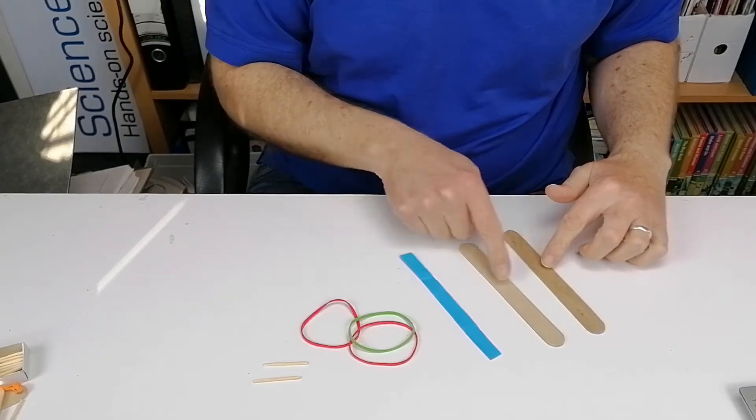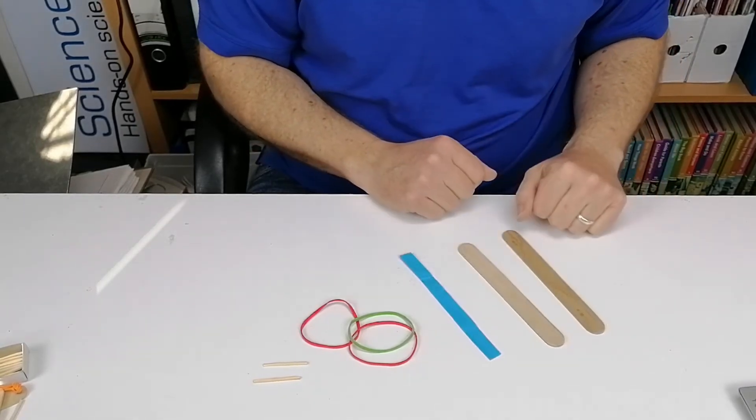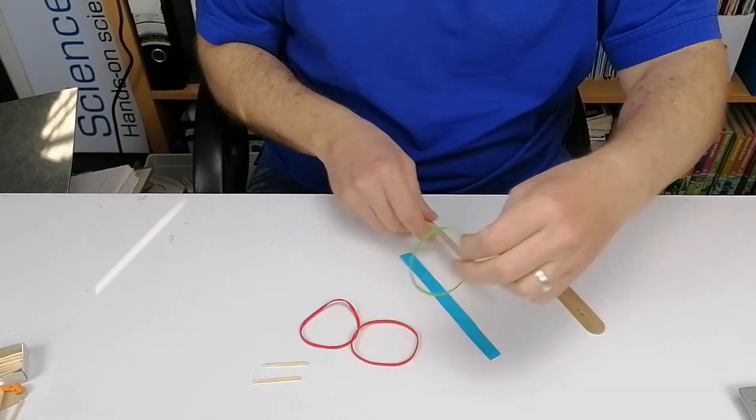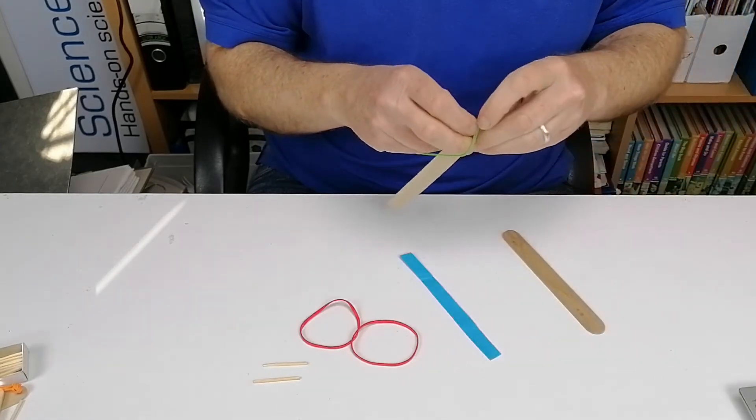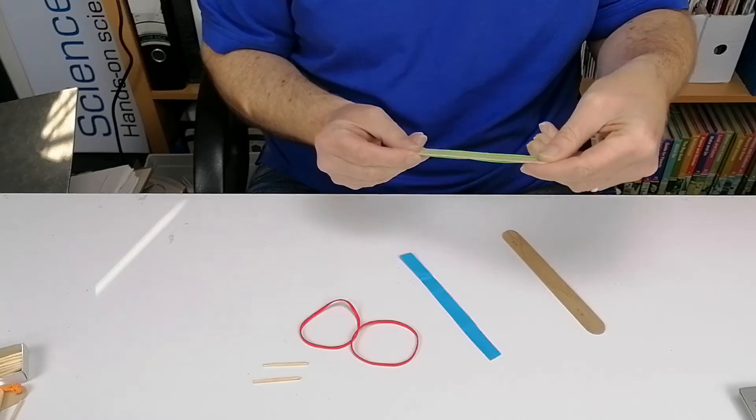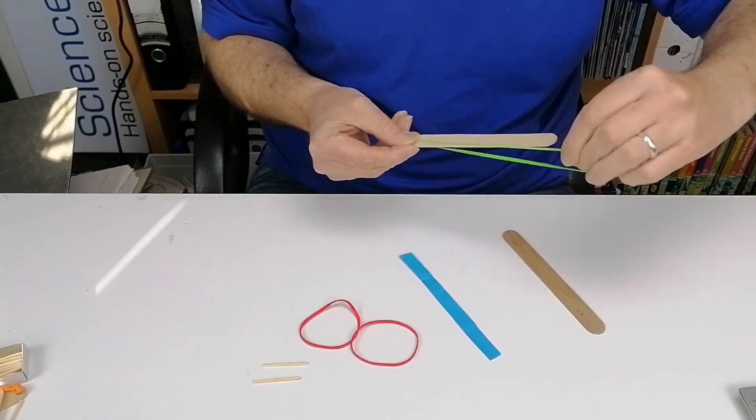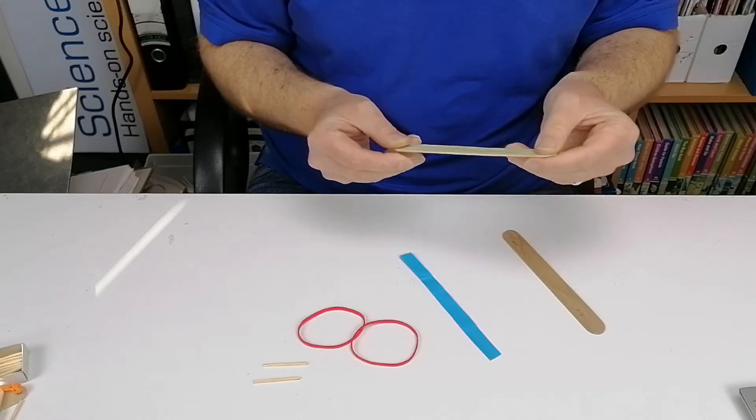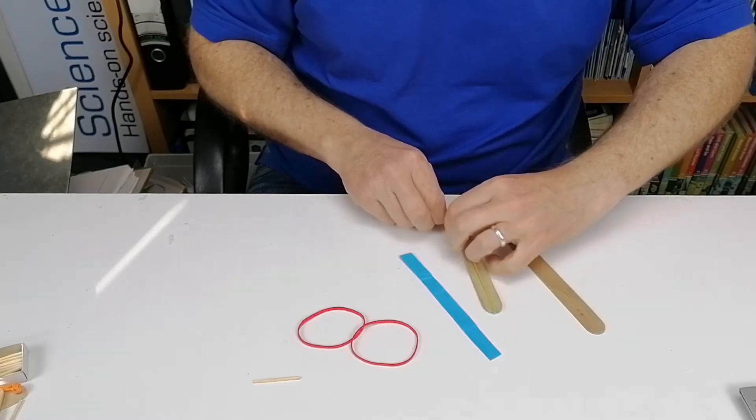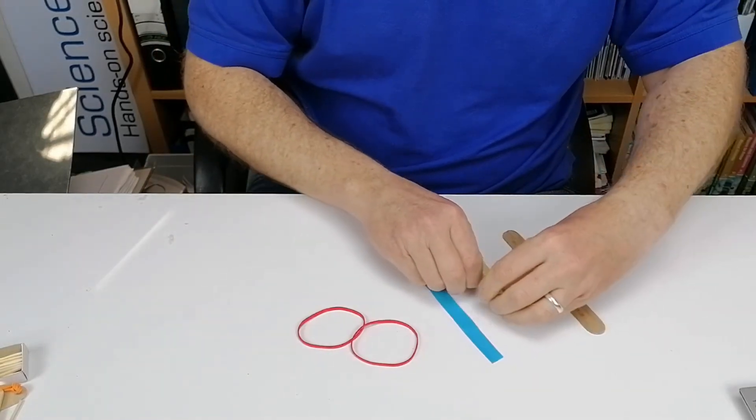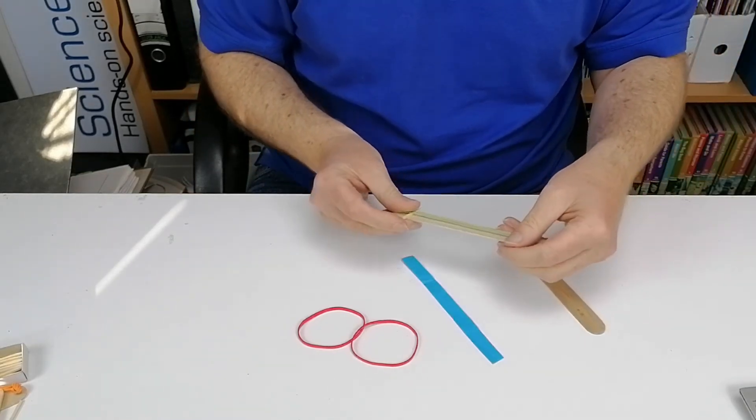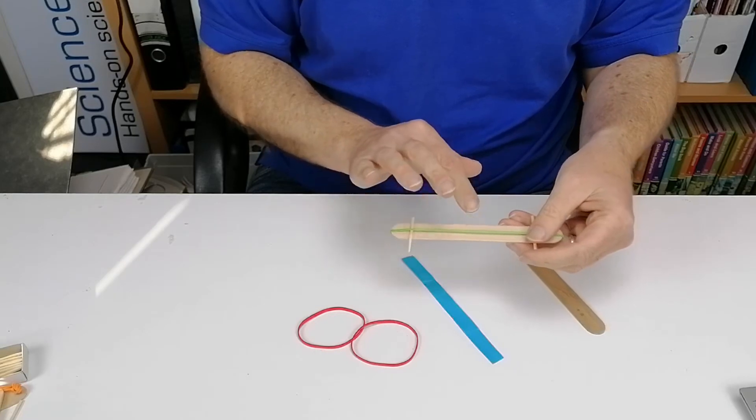To make the first one, get one of the elastic bands and wrap it around one of the lollipop sticks. Try to keep it so there's no twists in it. If there are twists, just take them out. Then get one of the matchsticks and put it underneath the elastic band. These act like bridges to hold the elastic band up from the lollipop stick so that when you blow over it, it will be able to vibrate up and down.